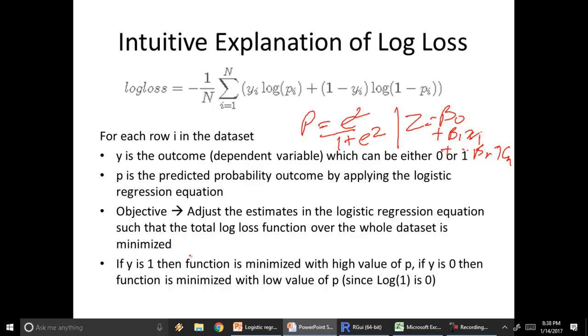How does this happen? For example, if we look at this, if y equals 1, then this part of the equation actually becomes 0, because 1 minus 1 is 0. So this essentially becomes 0 and our log loss simply becomes y into log of p. If y is 1, the log loss function is essentially log of p.